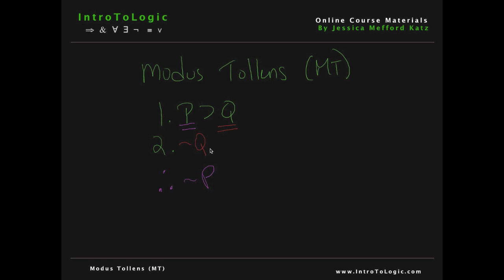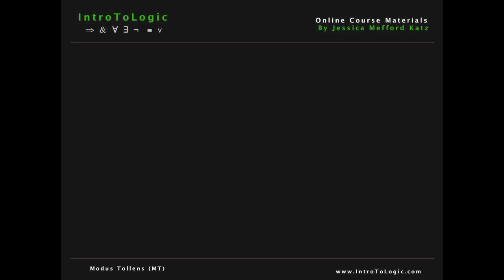So if we have a conditional, which in line 1 we do, and the negation of the consequent, which in this case is not Q, we can derive the negation of the antecedent, which would be the negation of P — not P. So let's consider an example of modus tollens.